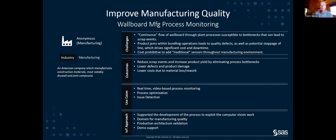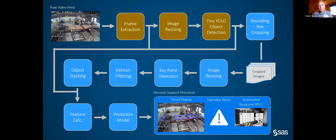In a manufacturing example, we're looking at a continuous process manufacturing line where we want to prevent product jams that result in loss of materials and reduced quality, and reduce defects. One takeaway is it's not just one module — there are a number of steps including frame extraction, image sizing, and using YOLO models. The system supports executing each task in order, with the end result being a decision support process that flags issues, generates operator alerts, and can push actions to PLCs to adjust the line accordingly.